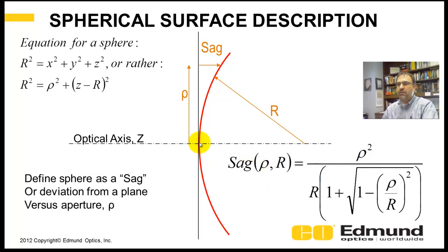Optical engineers redefine a spherical surface in terms of a sag. What is a sag? Well, this red curve here is your sphere, and we put a plane that is tangent to the vertex.